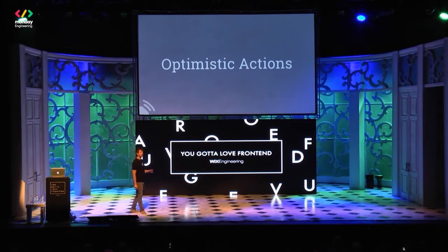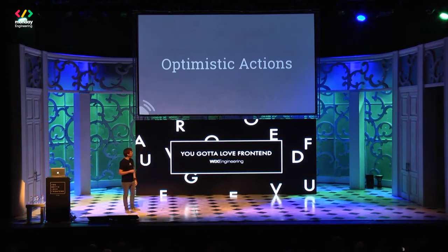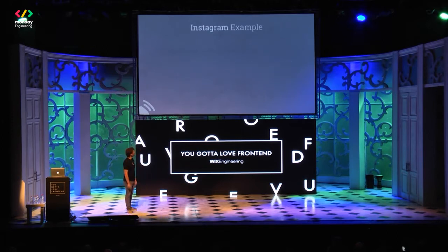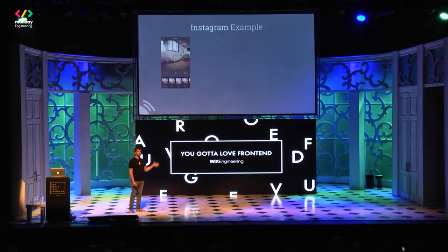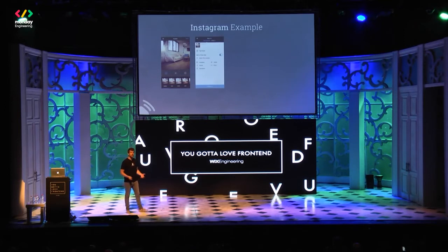Now I want to cover other techniques that will create a boom performance effect in your browser. One way to achieve it is using optimistic actions. Let's see one example: you all know Instagram. When you take a photo on Instagram, first you apply a filter, then you select where to share it — Facebook, Twitter, etc.